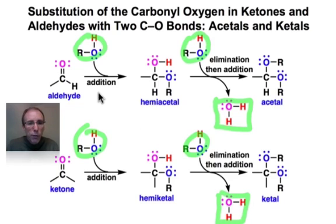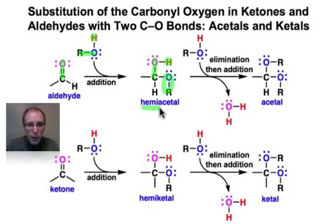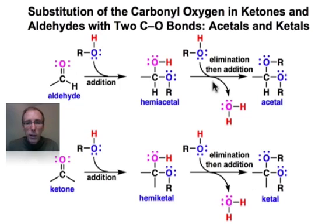In the first step, this involves an addition of the elements of alkoxide (OR) and hydrogen across the carbon-oxygen double bond. We've added alkoxide to the carbonyl carbon and H to the carbonyl oxygen. This functional group, in the case of aldehydes, is known as a hemiacetal, and in the case of ketones, a hemiketal — where the carbonyl carbon has a hydroxyl group and an alkoxide group. This is an intermediate on the way to the acetal and ketal. What happens next is an elimination reaction to make a double bond, then an addition of the second alkoxide group, where water is lost, generating the acetal and ketal.